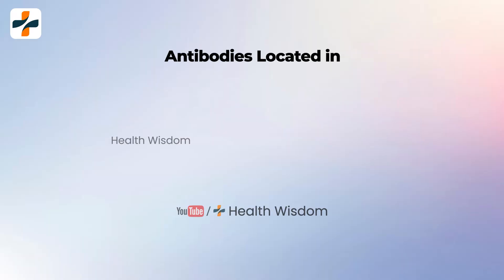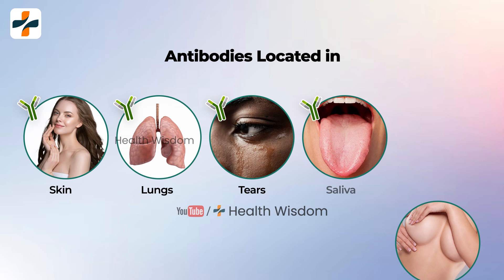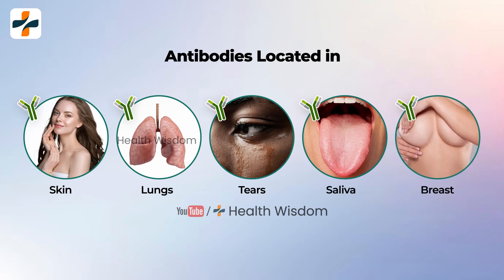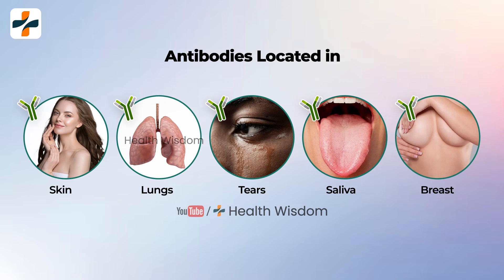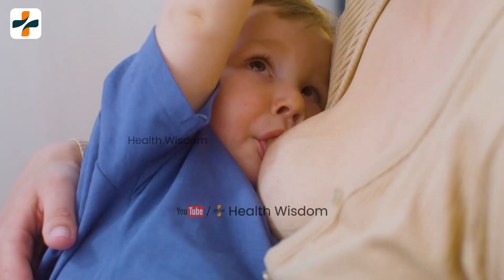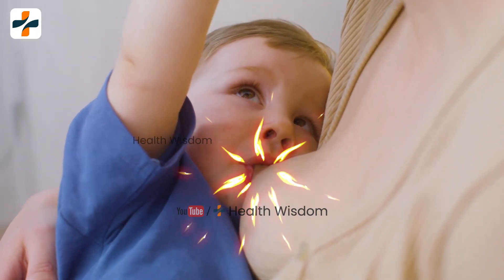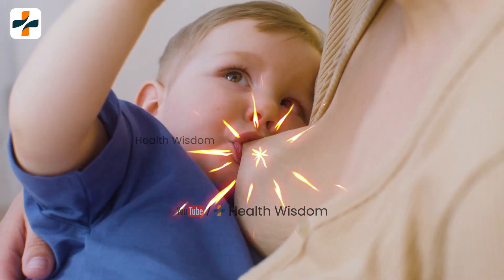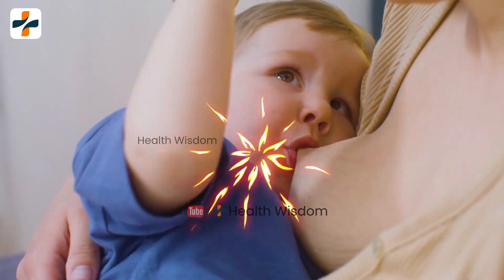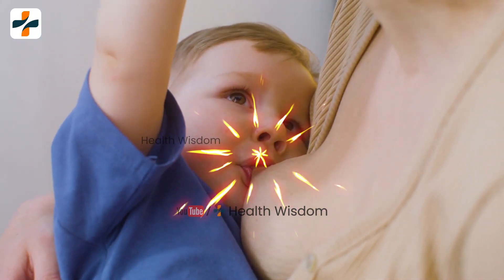Where are antibodies located? Antibodies are located in various areas of your body, including your skin, lungs, tears, saliva, and even breast milk. The high amounts of antibodies are present in colostrum, a thick fluid secreted by the breasts for a few days after giving birth. That's why breastfeeding can boost your baby's immune system.